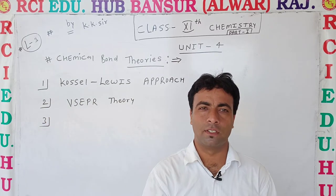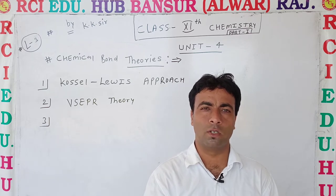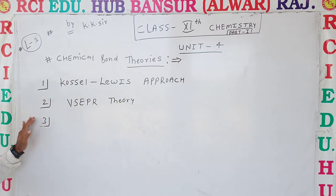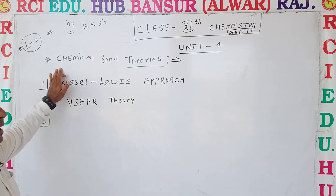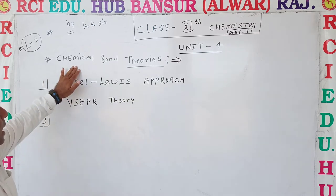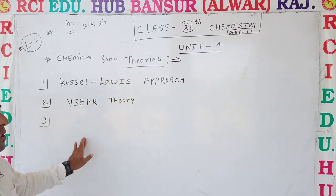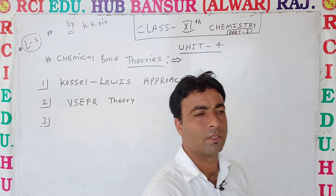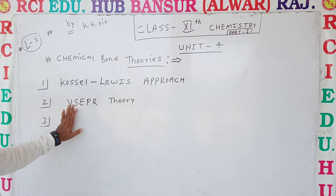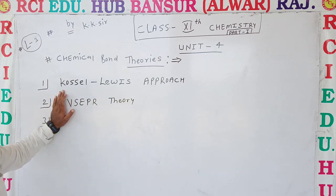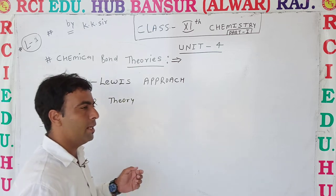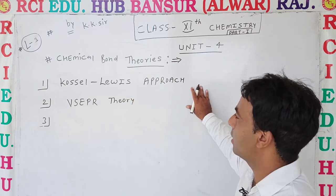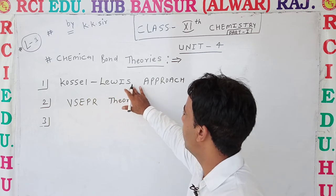Welcome dear students to RCI Education Hub Bansur Online Classes. Today we continue with Chapter 4, Chemical Bond, and today we start Chemical Bond theories. In the previous class you already saw the types of bonds — sigma, pi, and others. Today we see the formation of bonds as given by many scientists and chemists. First of all, the Kossel-Lewis approach, given by Kossel and Lewis.